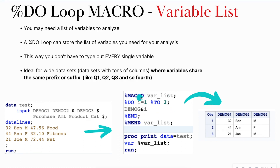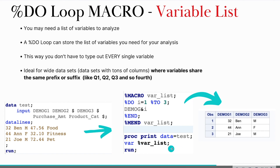I then created a macro called var list. I put my do loop in between the macro statement and the mend statement, just like we learned in part one. This is my do loop: I set i equal to one — the first number of the first variable — all the way to three, which is my last demographic variable. I call demog ampersand i, so this lets me cycle through demog1, demog2, demog3, storing all my demographic variables. I'm then able to do a proc print and call that macro with the percent sign to get out just my demographic variables.